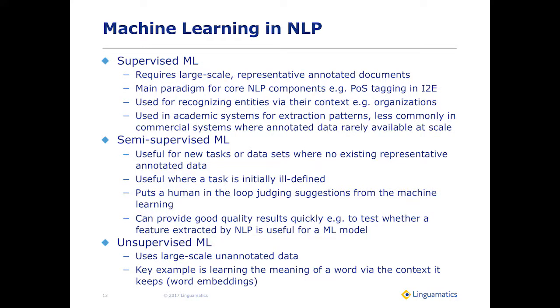For unsupervised machine learning, you take a very large dataset and create something from it. The key example in NLP at the moment is word embeddings — you take words and learn their meaning by the context they keep, the other words around them. You can do things like 'England minus London equals France minus Paris' using vector calculations and get a good correspondence, capturing some underlying notion of meaning. We've used this with Word2Vec for finding synonyms, and also have a thesaurus explorer using distributional similarity.